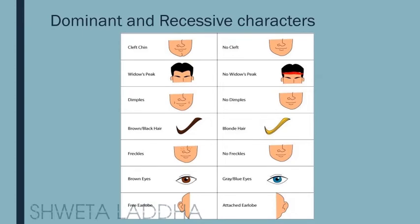Brown eyes is a dominant character; grey or blue eyes is recessive. Free earlobes is dominant; attached earlobes is recessive. So, I hope you have enjoyed these examples.